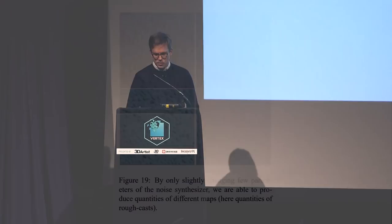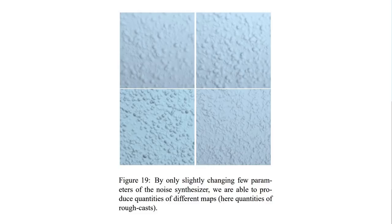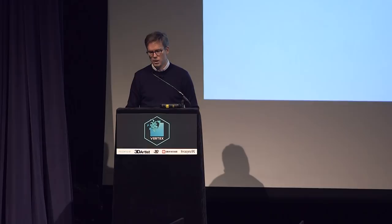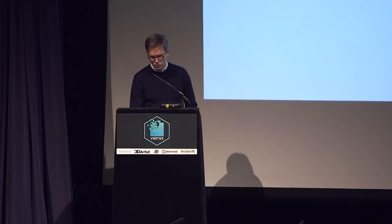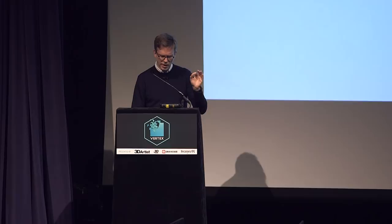The beauty of it was that by slightly tweaking those parameters, I could explore the neighborhood of that given process. By randomizing with a different random seed, I would obtain a different realization. By slightly modifying the capital G parameter, I would obtain something different in the shape of the paint drops. That was the beginning of exploring parameter space and obtaining different results from one procedural process.